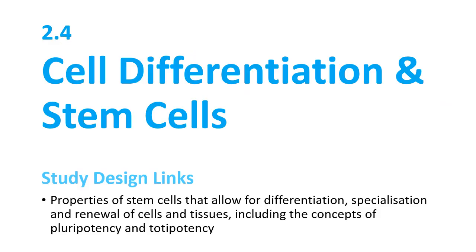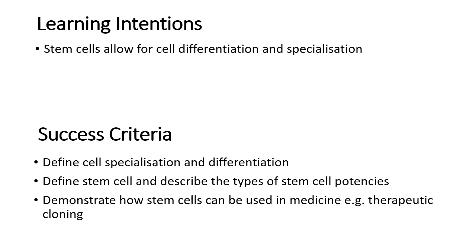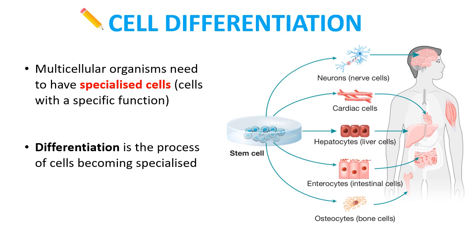We're into our last section in the second topic all about the cell cycle. This part focuses on cell differentiation and stem cells. The key learning intention is that stem cells allow for cell differentiation and specialization. At the end of this section you should be able to define those two keywords, define stem cell and describe the different types of stem cells and their potencies, and demonstrate how we can use stem cells in medicine.